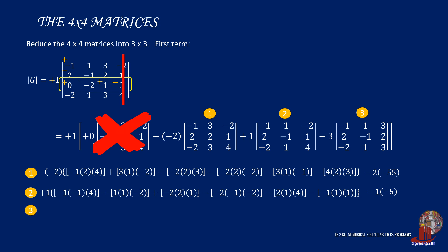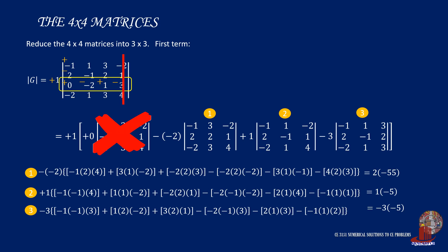Determinant 3 has minus 3 as a scalar. The determinant is computed as negative 1, negative 1, and 3. Then, 1, 2, and negative 2. With 2, 1, and 3. Its antidiagonals are negative 2, negative 1, and 3. Then, 2, 1, and 3. Also, 1, 2, and negative 1. These can be simplified as negative 5. With their scalars, the three small terms become negative 100. And then again, there is another scalar for the first term, that is positive 1. So, 1 times negative 100 is negative 100.